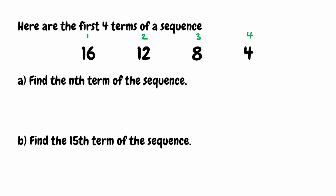The first thing we do is find the difference between each term — what's happening from term to term. From 16 to 12 we're taking away 4. From 12 to 8 we're taking away 4 again. And from 8 to 4 we're taking away 4 again. Because we've got a common difference, we know we have a linear sequence.